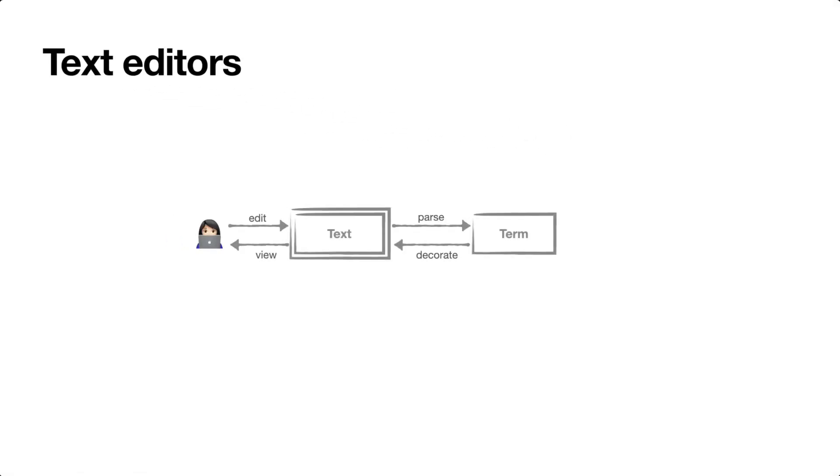Here's how they work at a high level. The programmer edits text which is then parsed into an abstract syntax tree or language term as I call them here. The editor runs analyses on this language term then propagates the results back to the text in the form of decorations like syntax highlighting or the red squiggles so that we can see them. And here I have a double border around text to indicate that it's the editor state.